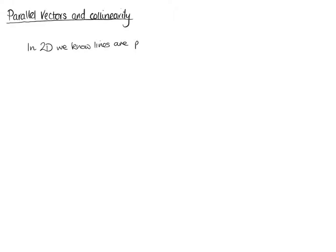We're now having a look at parallel vectors and collinearity. So in two dimensions, we know lines are parallel if their gradients are the same. We've known that since doing level 4. So we know lines are parallel if their gradients are equal.